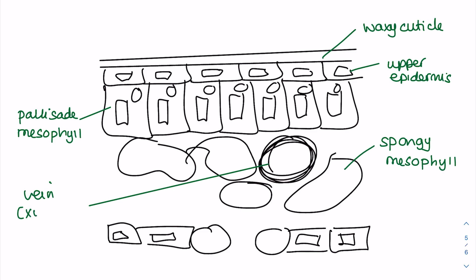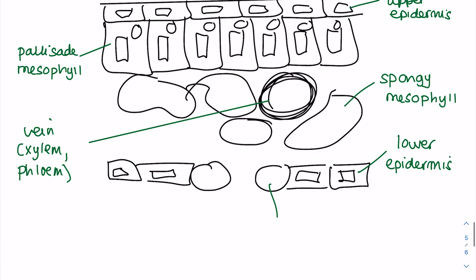Which contains the xylem needed to transport water into the leaf, and the phloem which is used to take sucrose and amino acids away from the leaf. Down here you have the lower epidermis, and then the all-important guard cells which control the opening and closing of the stomata, which are effectively holes in the leaf that allow carbon dioxide to enter the leaf for photosynthesis, oxygen to leave, as well as transpiration.